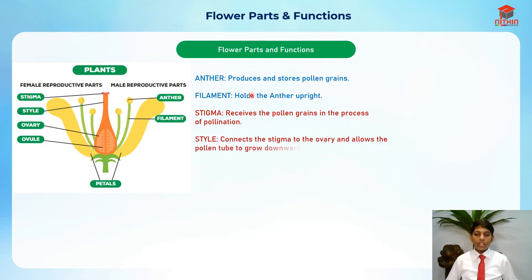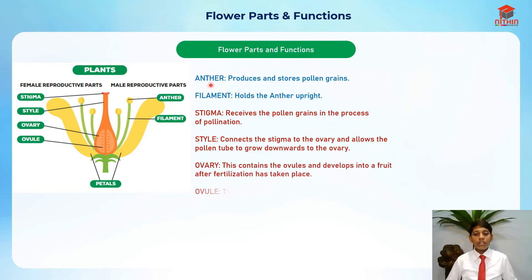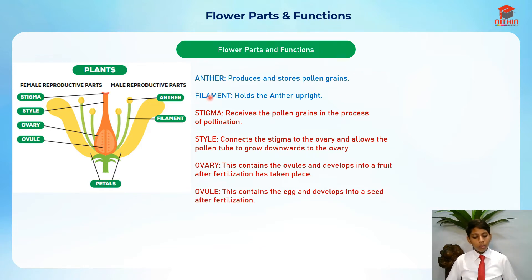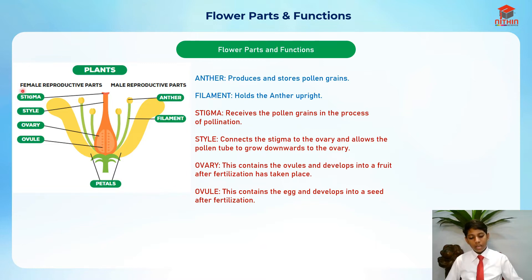Let's take a look at the male parts. The anther actually produces and stores the pollen grains. I hope you remember my plant cycle video because I've taught pollination and pollen grains there. The anther produces and stores pollen grains. The filament holds the anther upright.